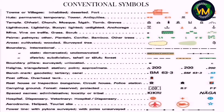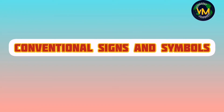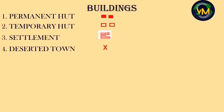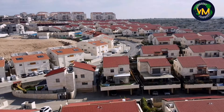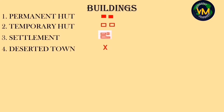Let's see some important conventional signs and symbols. For buildings: permanent hut — the squares will be shaded. For a temporary hut, only the outline will be there in red. A group of huts and other buildings together is called a settlement. In some settlements you can see the symbol X, which means it is deserted — nobody is living there now.